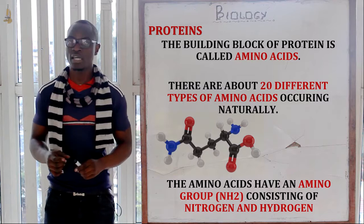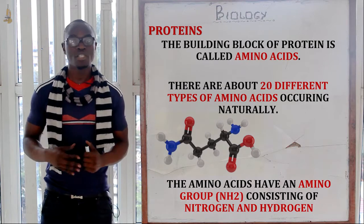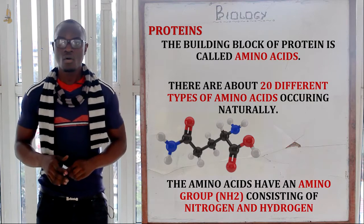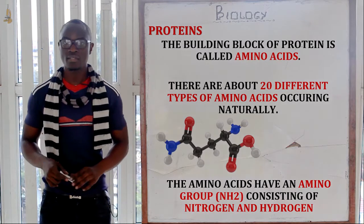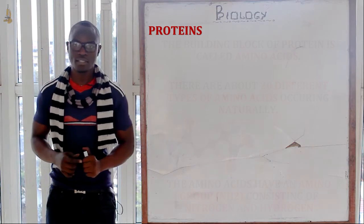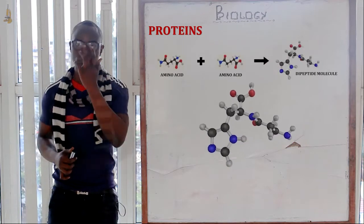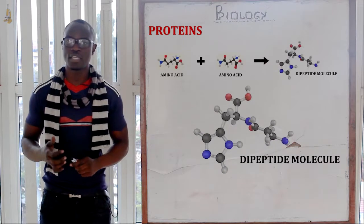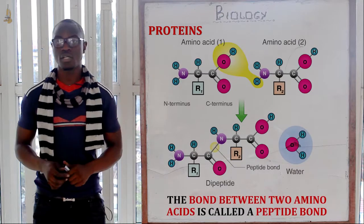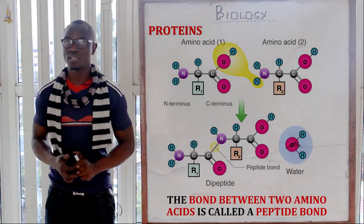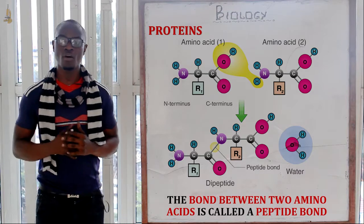All amino acids contain an amino group, which is NH2 — a radical containing nitrogen and hydrogen. Two amino acids may combine to give a dipeptide molecule, similar to carbohydrates. The bond formed in amino acids is called a peptide bond.